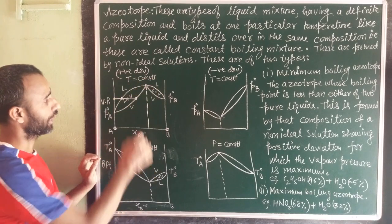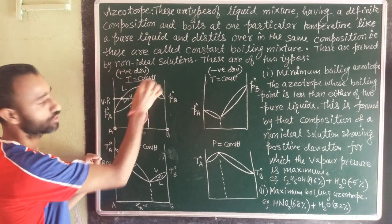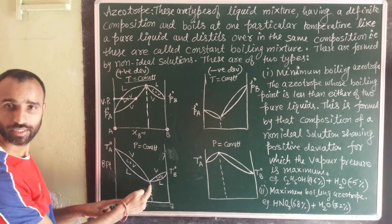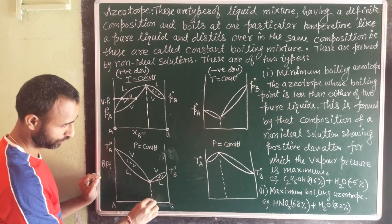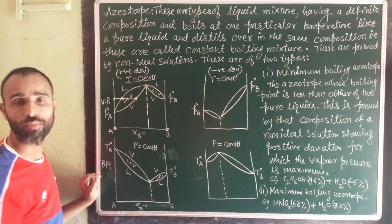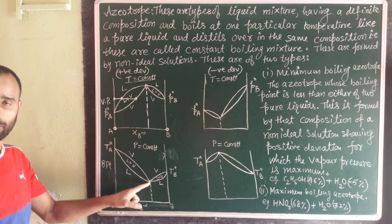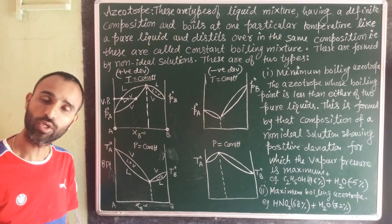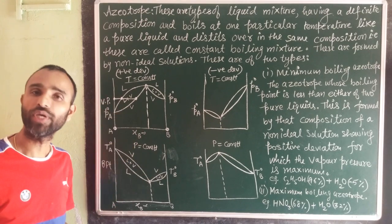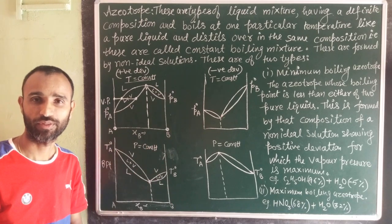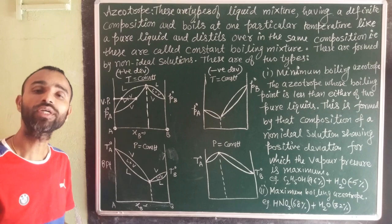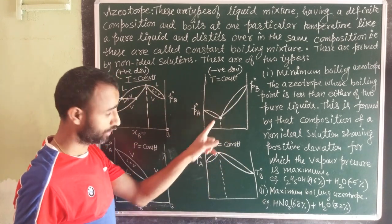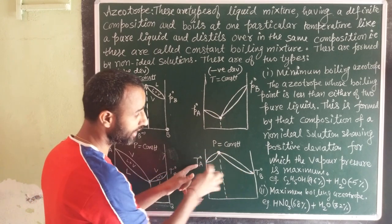At this particular composition and temperature, vapor pressure is maximum and boiling point is minimum. This is shown on the vapor pressure-composition diagram and the boiling point-composition diagram. Vapor pressure is maximum, boiling point is minimum at this particular composition, and it distills over as if it were a pure liquid — meaning on distillation, composition in the liquid phase is the same as in the vapor phase, so further separation is not possible.